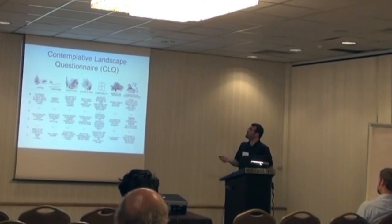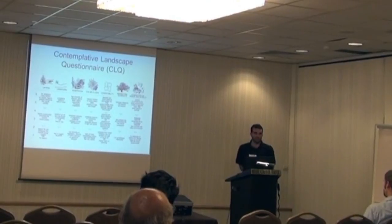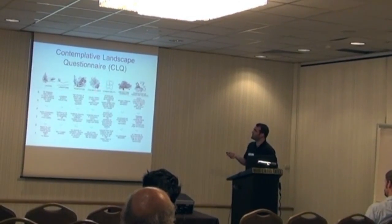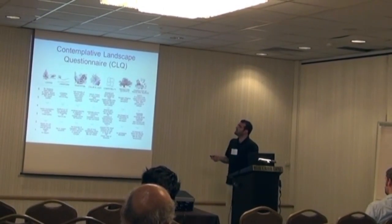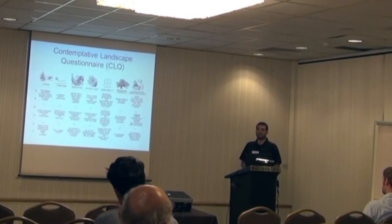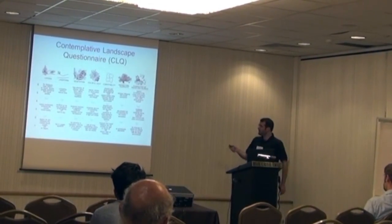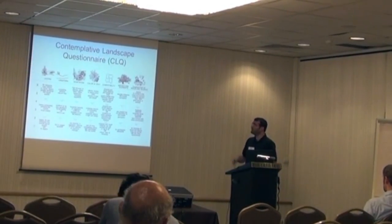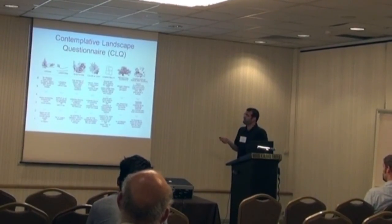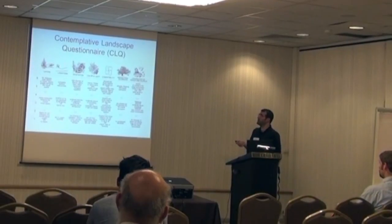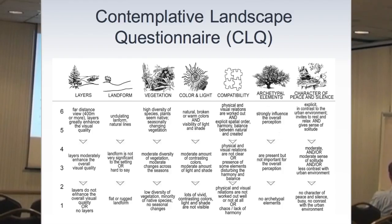In order to score the images, we used seven different features of the landscapes, which are not easily computerized — with the exception of maybe color and light. First, we use layers: how far you can see in the landscape, how big your vision is. Second is the landform — how nicely shaped the scenery is. Third is the vegetation, which is important to have biodiversity. Then, color and light — you have to have a colorful and bright scenery to score better. One is the worst score, six is the best.